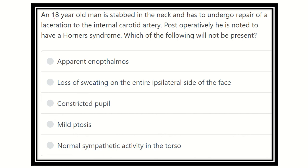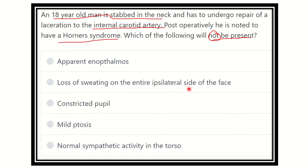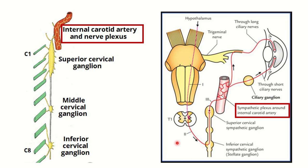So here we can see: an 18-year-old man is stabbed in the neck and undergoes repair of a laceration of the internal carotid artery. Postoperatively, Horner's syndrome is noted. Which of the following options is not related to Horner's syndrome? The options are: apparent enophthalmos, loss of sweating on the entire ipsilateral side of the face, constricted pupil, mild ptosis, and normal sympathetic activity.